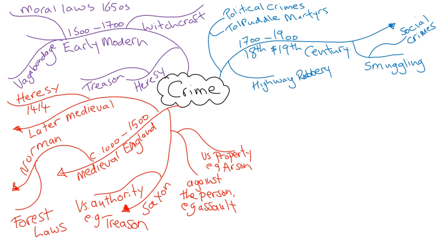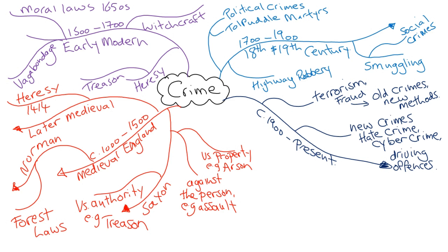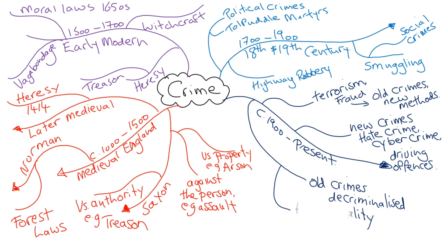To the present day, we have old crimes in new forms, such as terrorism and fraud. We have new crimes: hate crimes, homophobic crimes, cyber crimes, and driving offences like speeding. And we have old crimes that were decriminalised because of more liberal attitudes in the 1960s — for example, homosexuality and abortion were both decriminalised in the 1960s.